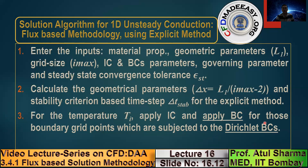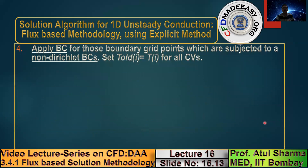In step 3, boundary conditions are applied for blue grid points subjected to constant wall temperature. For other walls with insulated, constant flux, or convective boundary conditions involving gradients, the blue grid point value is a function of the border yellow circle, which changes with time — so that boundary condition must be kept inside the time loop. This is presented as step 4, where boundary conditions for non-Dirichlet or non-constant wall temperature type boundary conditions are applied. Then we store all the initial and boundary condition data — the data for the first picture — in a separate matrix to generate data for the new picture.